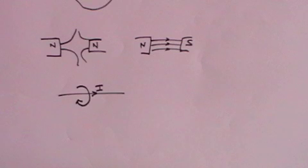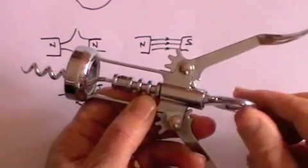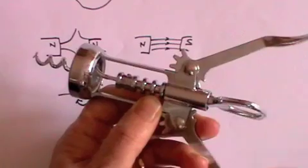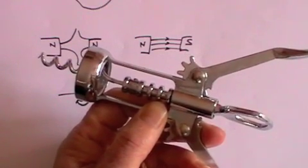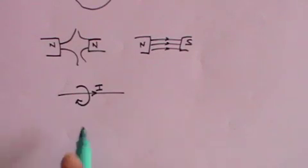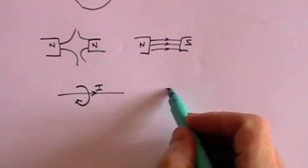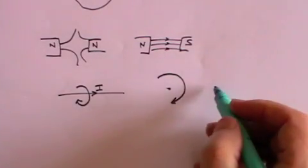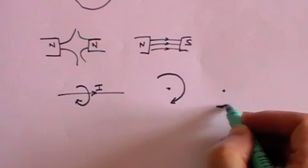Which way does that magnetic field go? Well we have to apply what's called the corkscrew rule. Think about a corkscrew: if you twist it clockwise, you drive the corkscrew into the bottle; if you twist it anti-clockwise, you pull the corkscrew out of the bottle. It's the same as a screwdriver — if you turn the screwdriver clockwise you drive the screw in; if anti-clockwise, you pull it out. And that's the principle we apply here. If the current is going into the paper, the magnetic field will go clockwise. If the current is coming out of the paper, the field will be anti-clockwise.